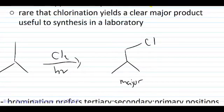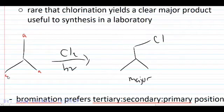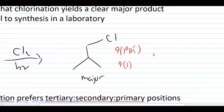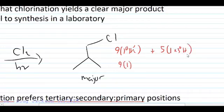We've got here isobutane. It's got three equivalent CH₃ groups for a total of nine ways to make this particular primary product — nine hydrogens that are primary and of the same type. That's going to give us nine times one relative odds versus the tertiary position, which has five times the odds but only one tertiary hydrogen. So one tertiary hydrogen here, five times the odds, gives us five times one.